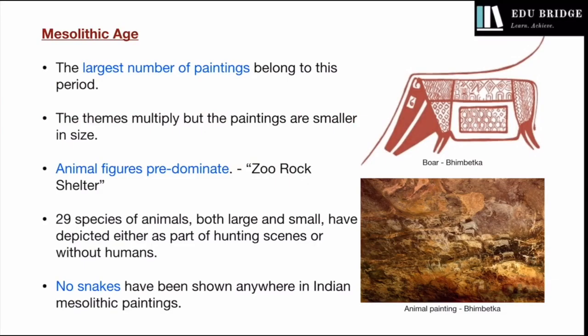The Mesolithic Age is considered to be the most important phase for prehistoric art in the entire subcontinent, and the same is true for Bhimbetka as well. The largest number of paintings have been found here belonging to this period. The number of themes multiplied, but the paintings are smaller in size. Not only hunting, dancing, or large animals are covered, but mundane daily life activities including family life and various scenes are also shown — scenes of gathering food, preparing food, feeding, etc.